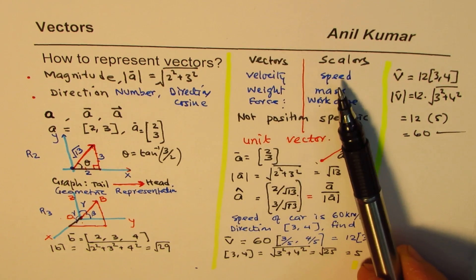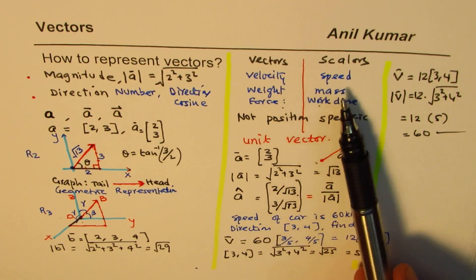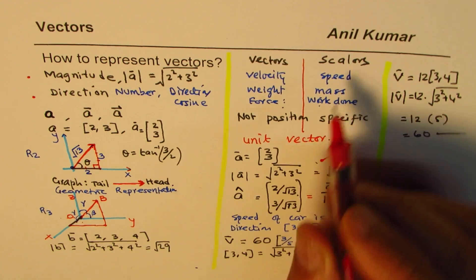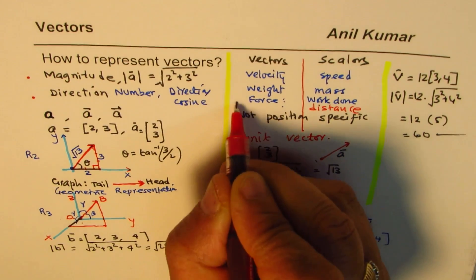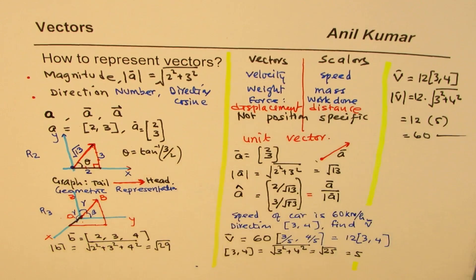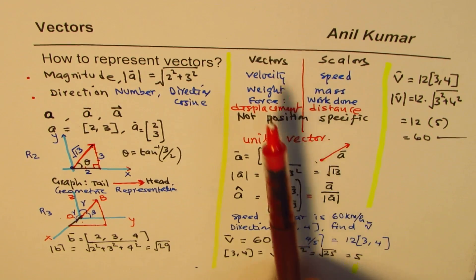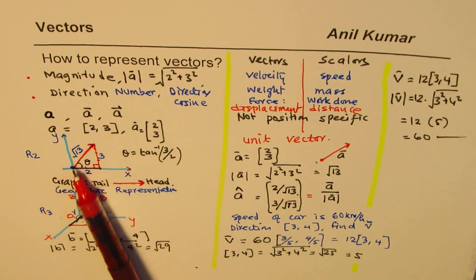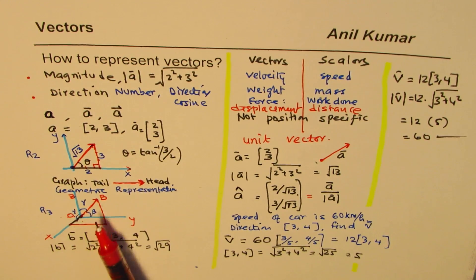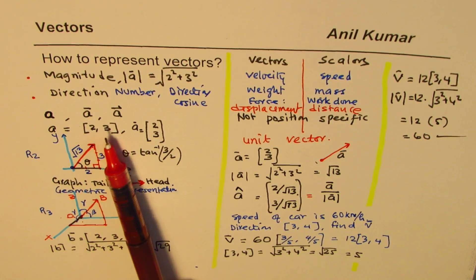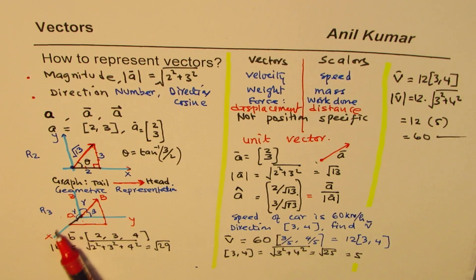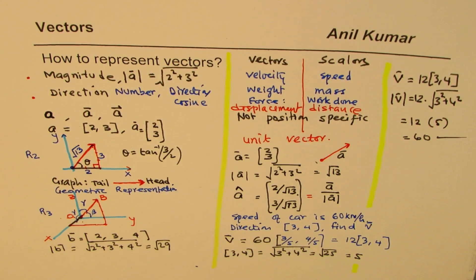Distance and displacement: distance is a scalar, displacement is a vector. If you go 2 km north and come back, the distance is 4 km but displacement is zero because you returned to the start — the directions cancelled. Vectors can be two-dimensional or three-dimensional, represented using coordinate points. Vectors are free to move — you can draw the tail anywhere.